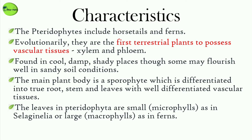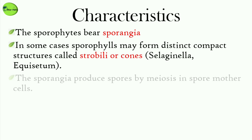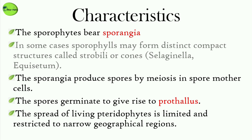The leaves in pteridophytes are small, as in Selaginella, or large, as in ferns. The sporophytes bear sporangia, which are subtended by leaf-like appendages also known as sporophylls. In some cases, sporophylls may form distinct compact structures also known as strobili or cones. The sporangia produce spores by meiosis in spore mother cells.